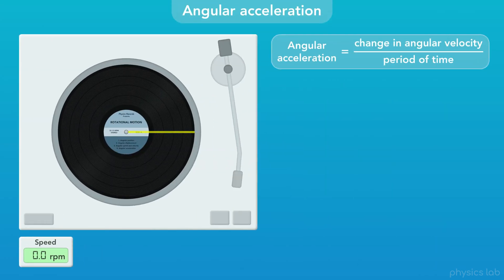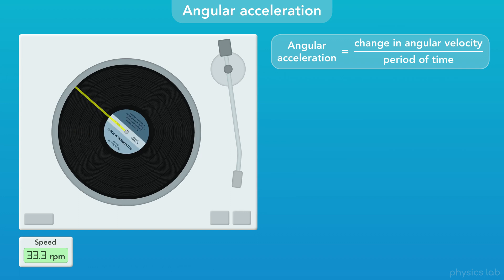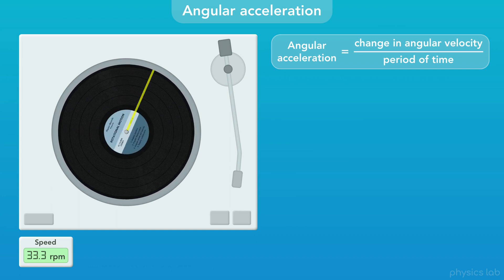Angular acceleration is the change in angular velocity divided by the period of time. If we turn on this record player, the record starts with an angular speed of 0 RPM and it needs to accelerate to reach a speed of 33 and a third RPM before the record can be played.